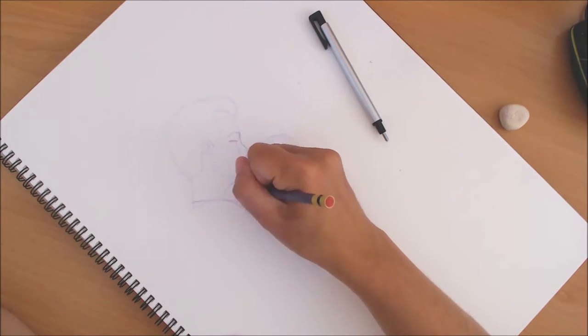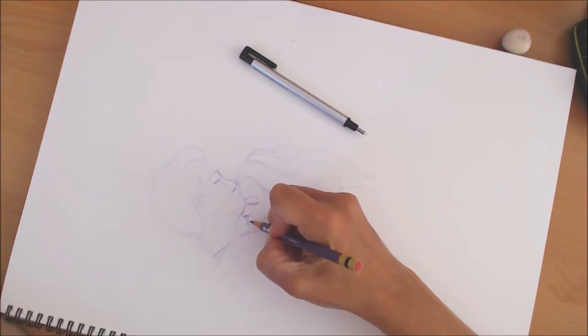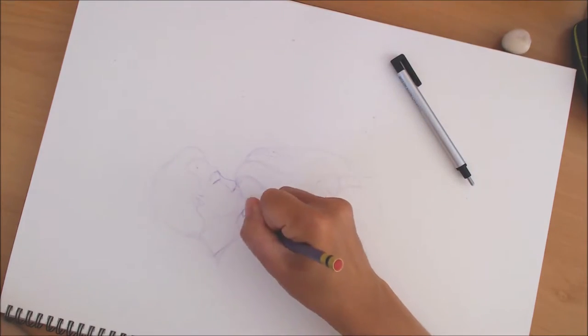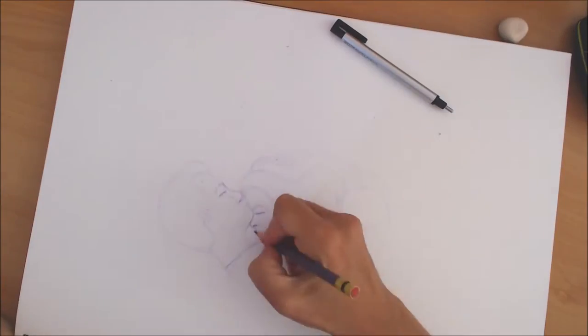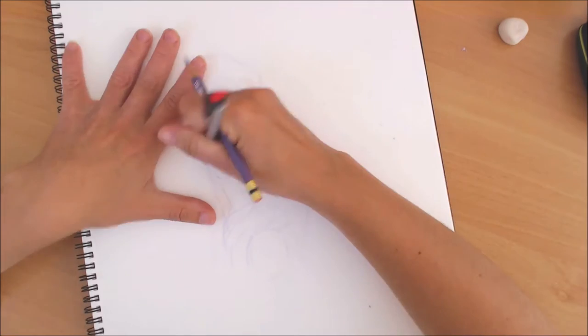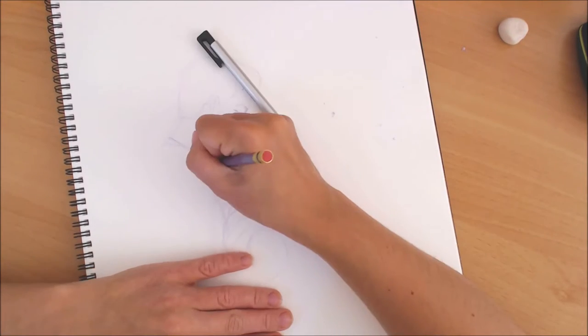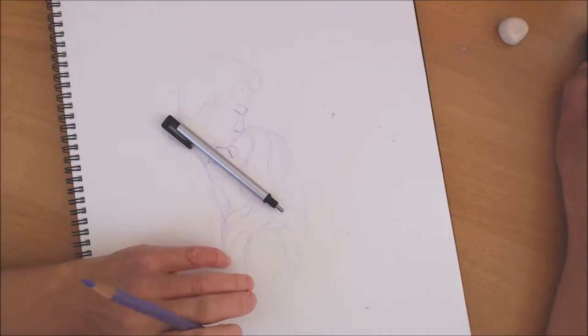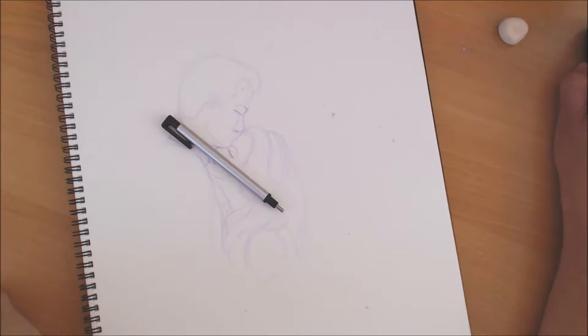And I find for me that I get better results if I draw this space and then draw the arm and then the rest of the figure. It gives you a much better, much more realistic feel—a much more proportionately balanced drawing.